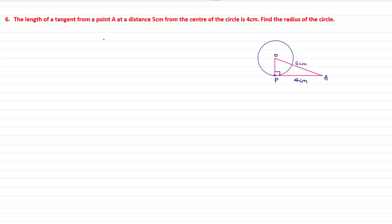Radius and tangent are perpendicular. Therefore, angle OPA is equal to how much degree? 90 degree. Yes. Solution.